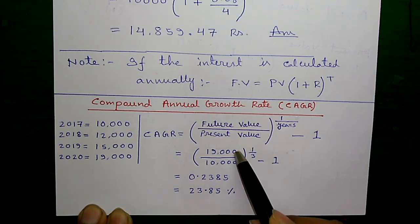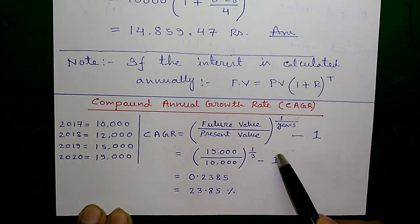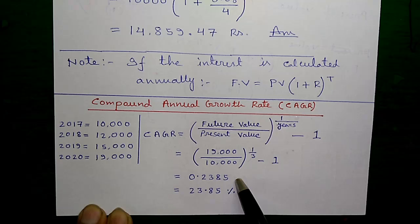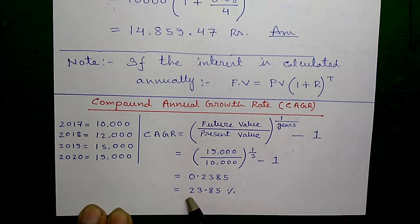Equals to $19,000 divided by $10,000 to the power 1 by 3 years, minus 1. Equals to 0.2385 times 100 equals to 23.85. So your investments are growing at the rate of 23.85%.